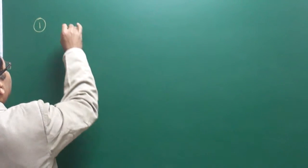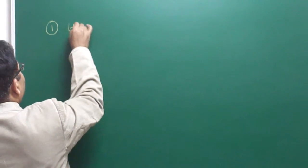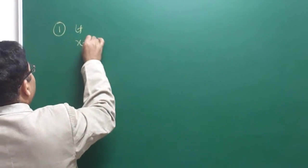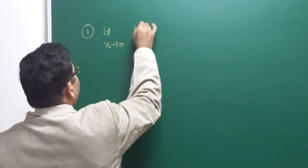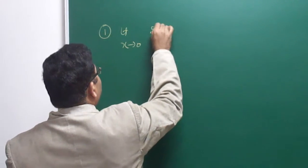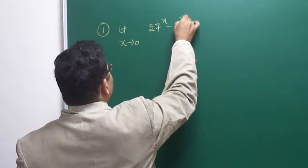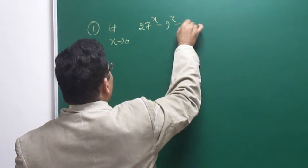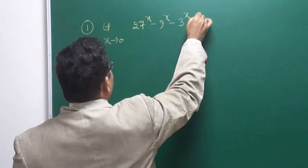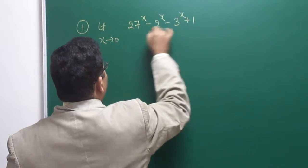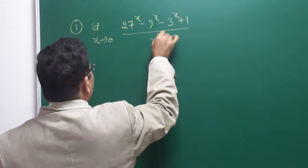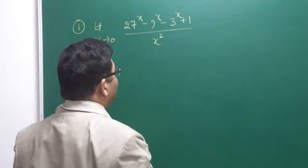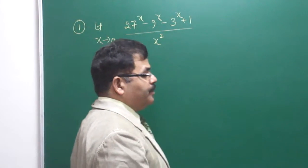The first question is: limit x tends to 0 of (27 to the power x minus 9 to the power x minus 3 to the power x plus 1) upon x square.